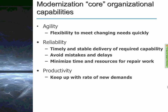I've broken this down into three core organizational capabilities that span both across the enterprise and within IT — and these are the goals you can keep in mind for your IT organization or development teams. One is agility: the flexibility to meet changing needs quickly. Then reliability, which underlies both agility and productivity. We need timely and stable delivery of required capability. We need to avoid mistakes and delays — not just from the standpoint of consuming IT resources, but from the direct and indirect costs to the organization. Reliability is essential to minimize time and resources for repair work, particularly for having to go back and rework applications.